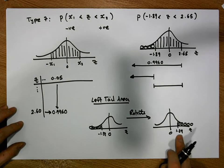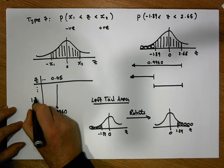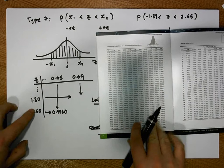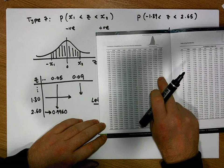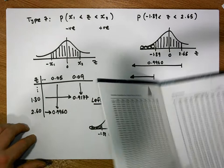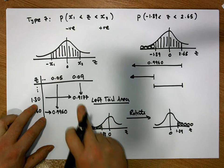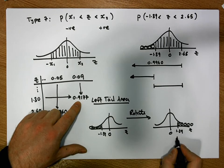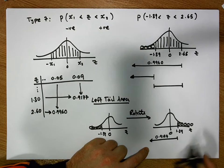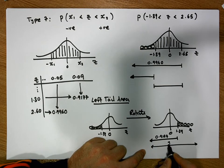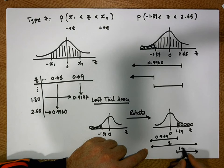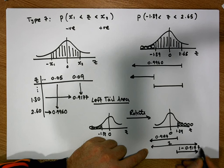We look up 1.39 on the tables: we come down to row 1.30 and across to column 0.09, which gives us a value of 0.9177. That value is the area to the left-hand side of 1.39. We know from the characteristics of the standard normal curve that the total area under the curve equals one. So if we take the shorter line away from the longer line, we get the area in the right-hand tail.